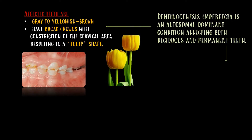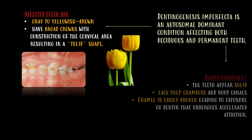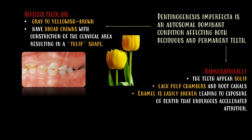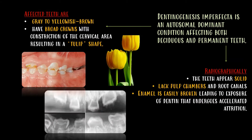In the radiographic picture, the teeth appear solid and lack pulp chambers and root canals. Enamel is easily broken, leading to exposure of dentin that undergoes accelerated attrition.